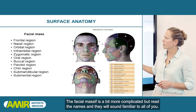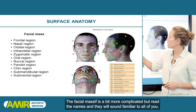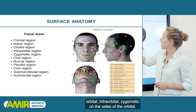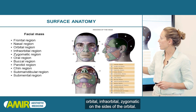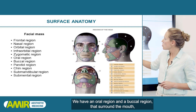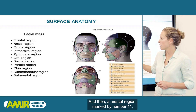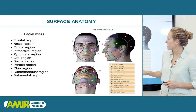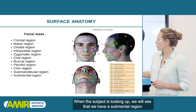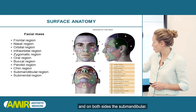The facial massive is a bit more complicated, but the names will sound familiar. The frontal region, the nasal region, orbital, infraorbital, and zygomatic on the sides of the orbital. We have an oral region and a buccal region that surround the mouth, a parotid region just inferior to both pavilions, and then a mental region. When the subject is looking up, we will see a submental region and, on both sides, the submandibular.